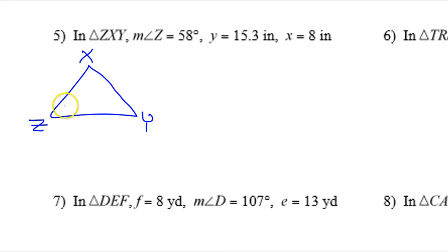Angle Z is 58 degrees. And then Y is 15.3. This is side Y. I can tell because it's lowercase. So that is 15.3 inches. And side X is 8 inches. Side X will be across from angle X. So this is 8 inches.